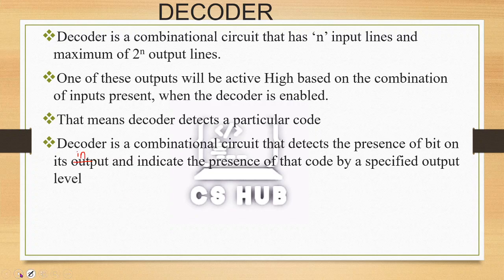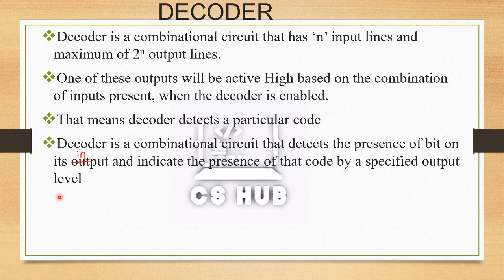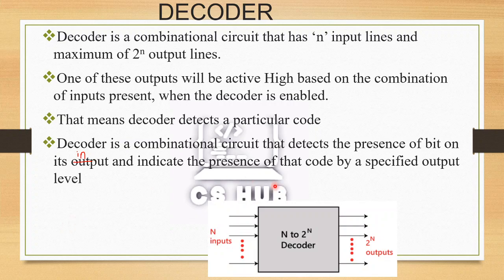The decoder indicates the presence of that code by a specified output voltage level. This is shown in the general block diagram: an n-to-2-raised-to-n decoder circuit with n inputs and 2 raised to n outputs.